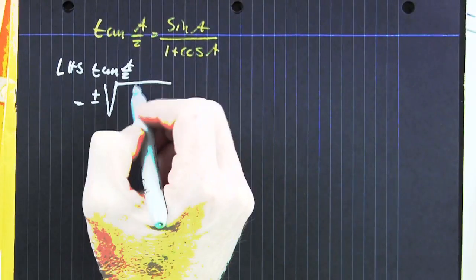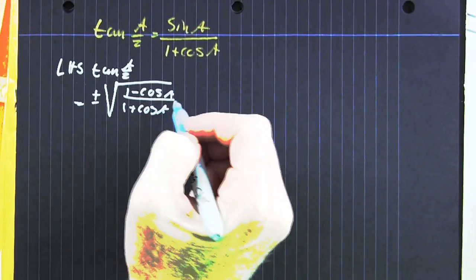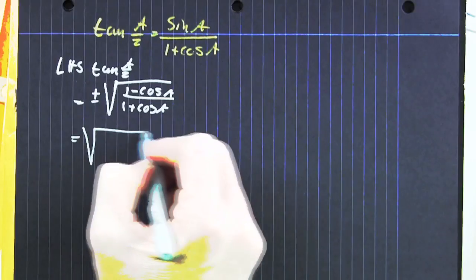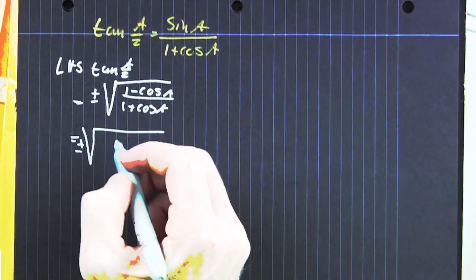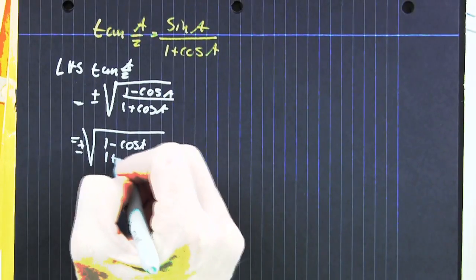So we rewrite the left-hand side because we're not lazy. And the sine of the half angle of a over 2 is plus or minus the square root of 1 minus cosine of a divided by 1 plus the cosine of a.